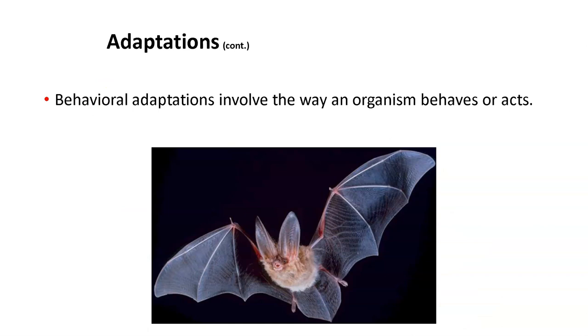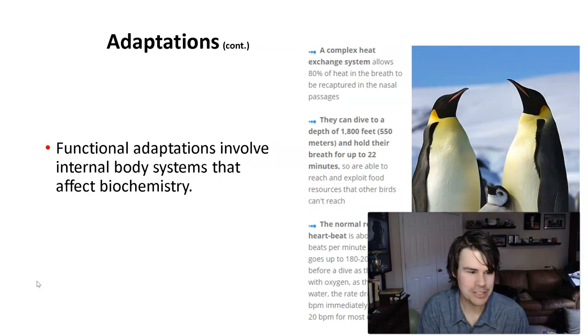Behavioral adaptations involve the way an organism behaves or acts. What's the term used for how bats locate things? Echolocation. Behavioral adaptations involve the way an organism behaves or acts. I would have shown you a video in class, but I'm going to put the link down at the bottom — I want you to watch it. It's awesome about how bees know where they're going based upon a dance that they do.